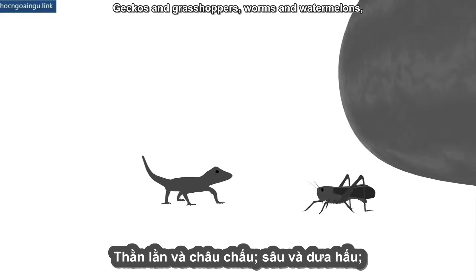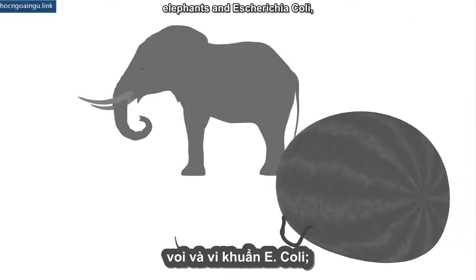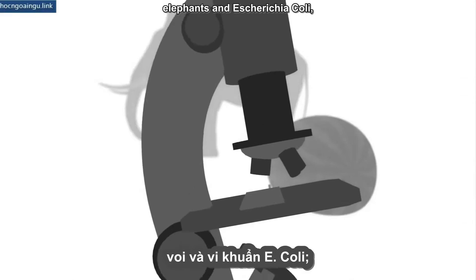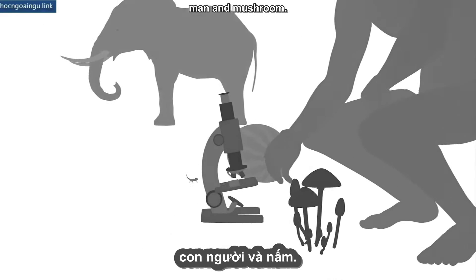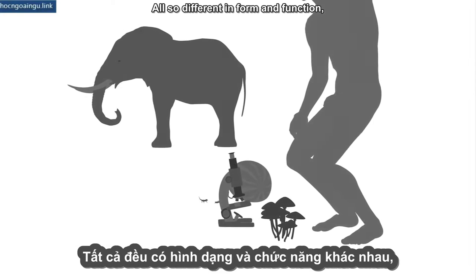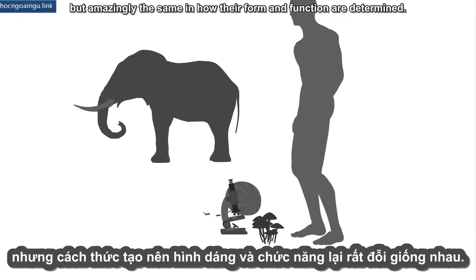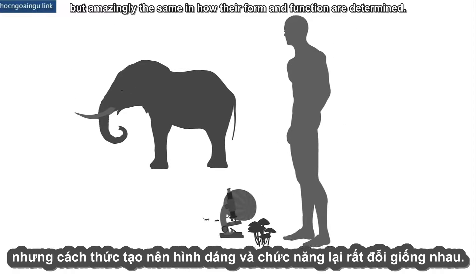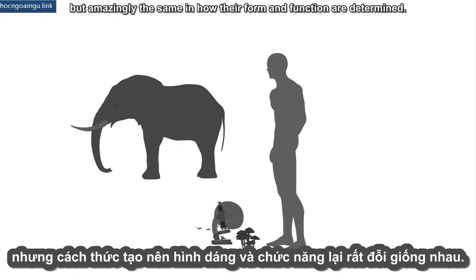Geckos and grasshoppers, worms and watermelons, elephants and Escherichia coli, man and mushroom — all so different in form and function, but amazingly the same in how their form and function are determined.